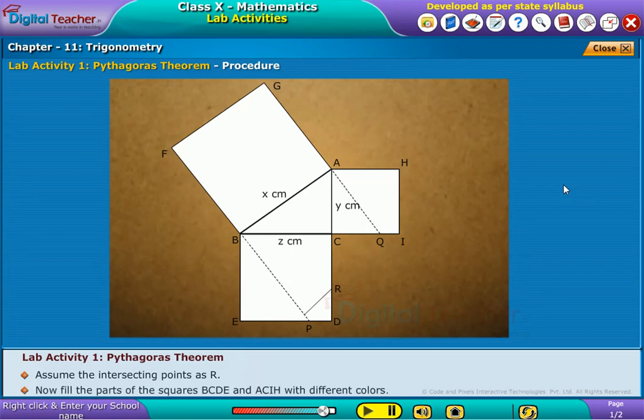Now fill the parts of the squares BCDE and ACIH with different colors.